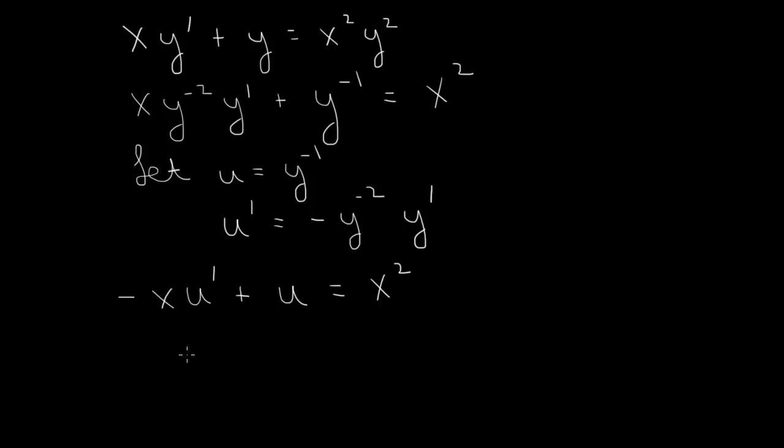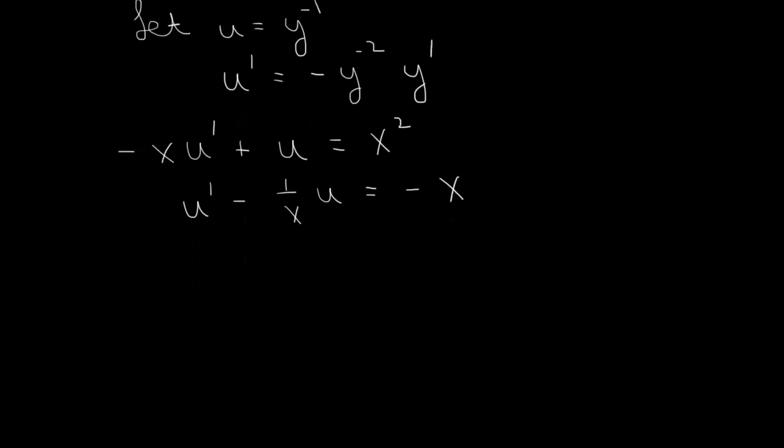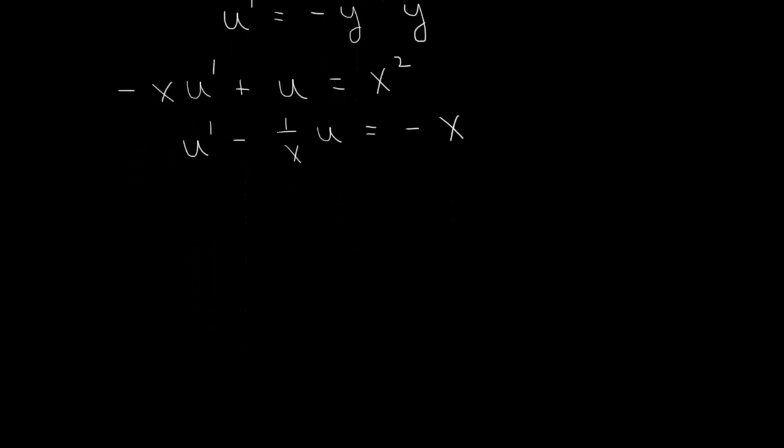So that's a linear equation, which we can write in the form u prime minus 1 over x u equal to, dividing through by minus x, that's equal to minus x. OK? So that's a linear equation. So we can solve this equation.